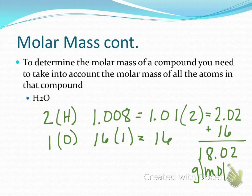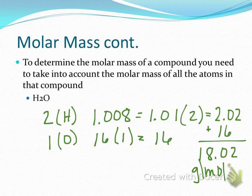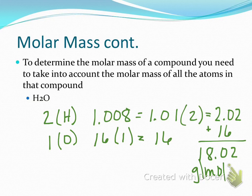If I ask for the atomic mass of water, it's 18.02 AMU. The difference is that grams per mole — molar mass — means one mole of that substance: 6.022 times 10 to the 23rd water molecules. If I'm looking at AMU, that means I have one single water molecule: two hydrogen atoms and one oxygen atom.